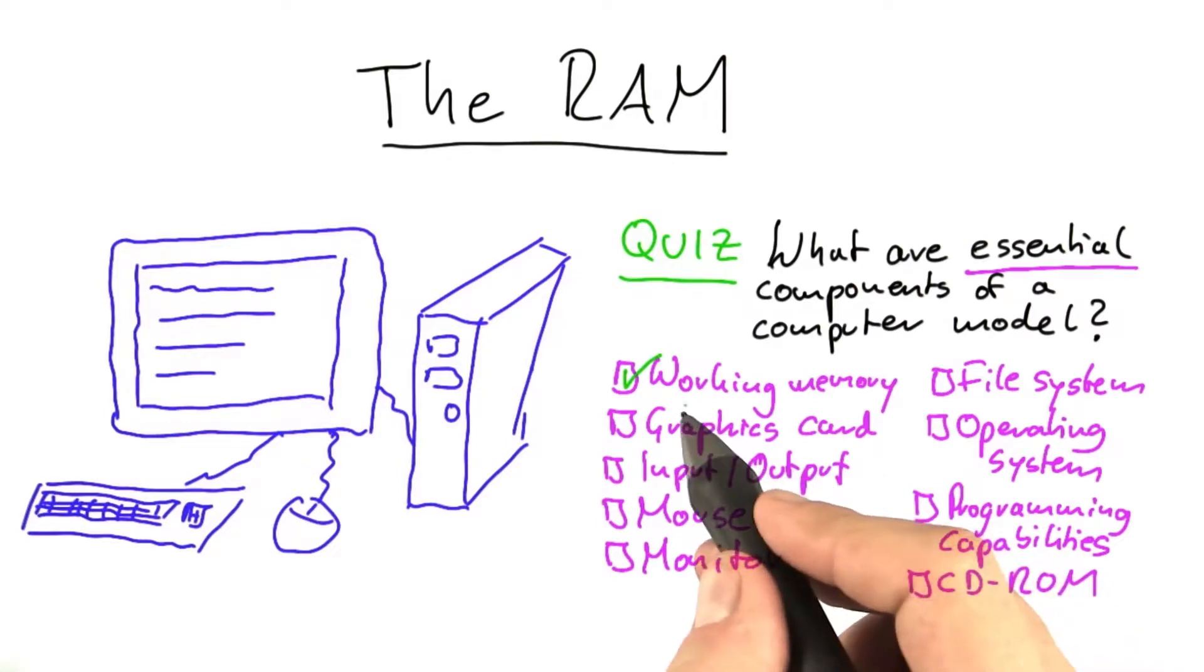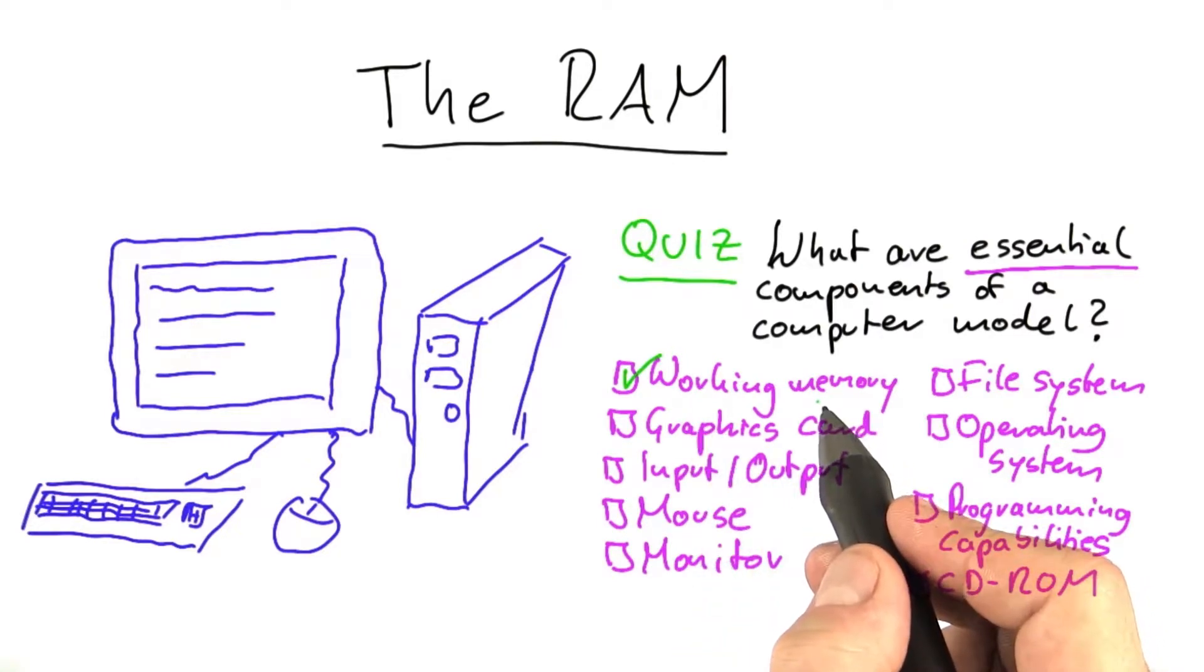The first one is you need a memory for the computer, because otherwise it will not really be able to perform any computations.